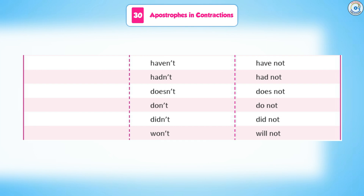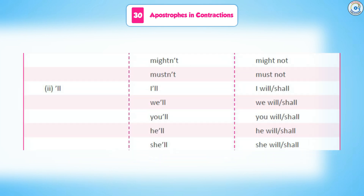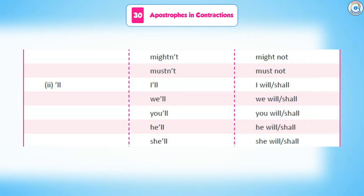Continuing negative contractions: won't (will not), shan't (shall not), wouldn't (would not), shouldn't (should not), can't (cannot), couldn't (could not), mayn't (may not), mightn't (might not), mustn't (must not).